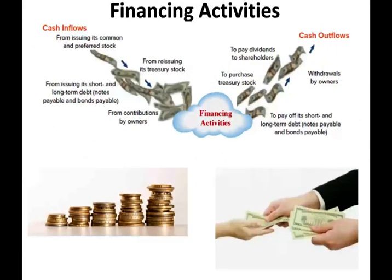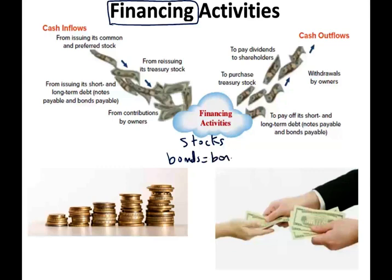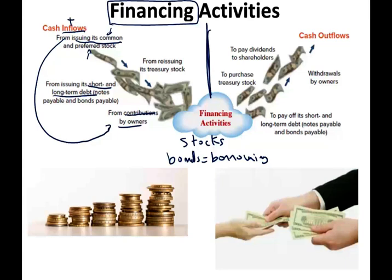The third and last category in the cash flow statement, according to U.S. GAAP, is financing activities. The word 'financing' refers to how you finance your business — by issuing your own stocks and bonds. When we issue stocks — whether common or preferred — that brings us cash inflow. We can issue short-term or long-term debt, which means we're borrowing money. The owner can also contribute money, and we can reissue our own treasury stocks, which also brings in cash.